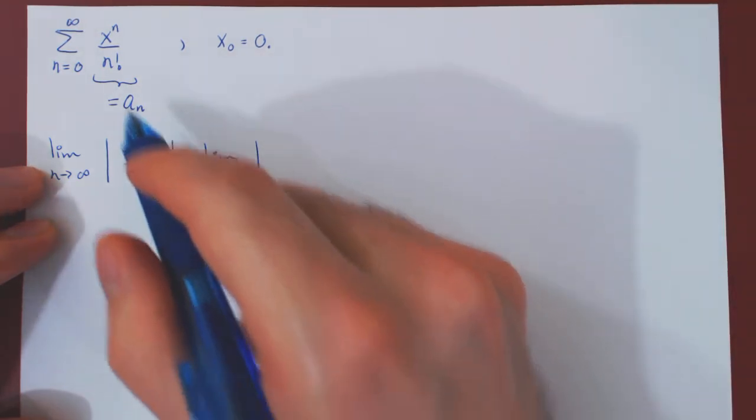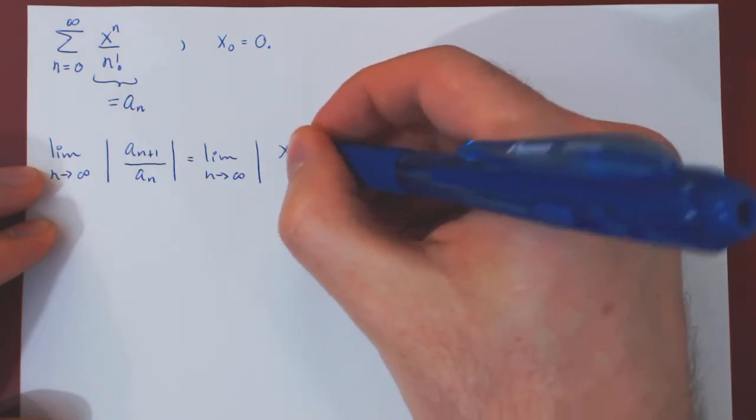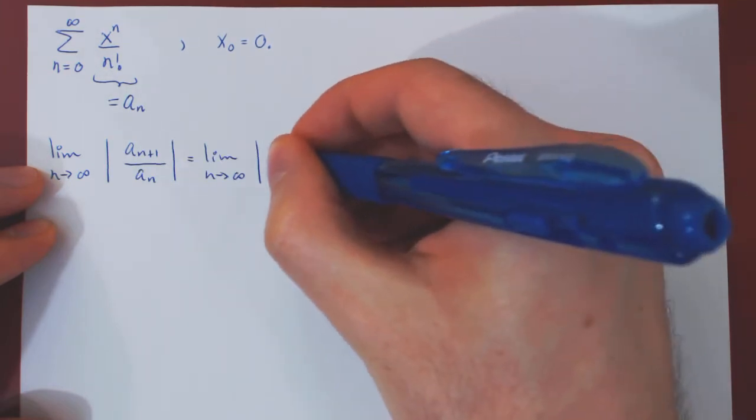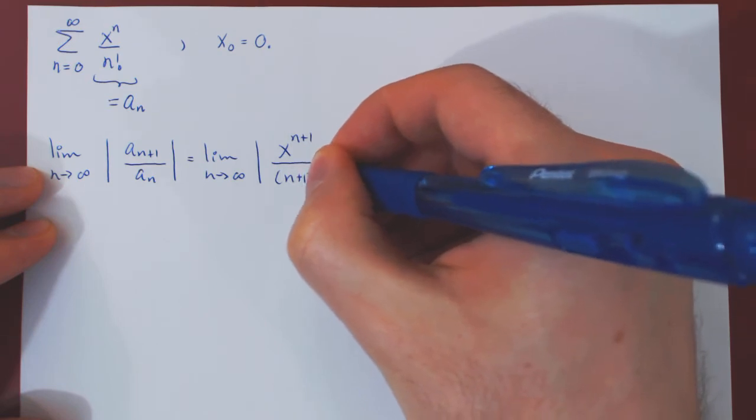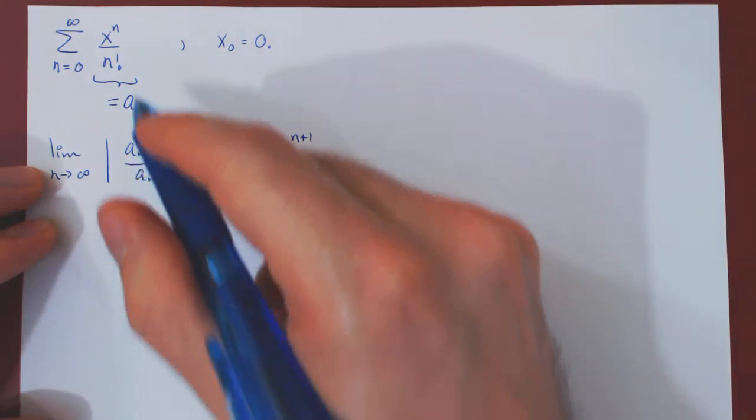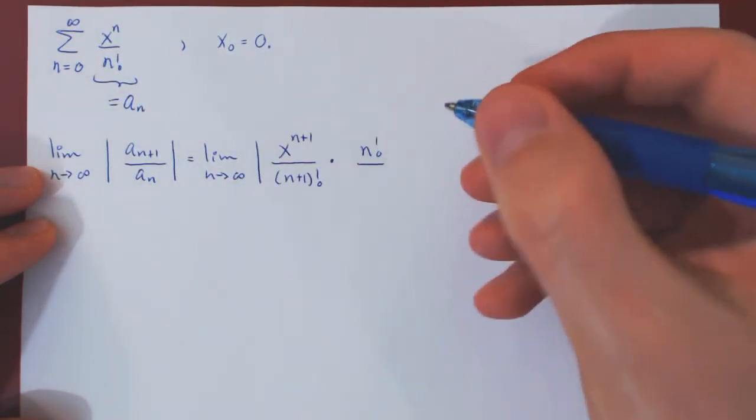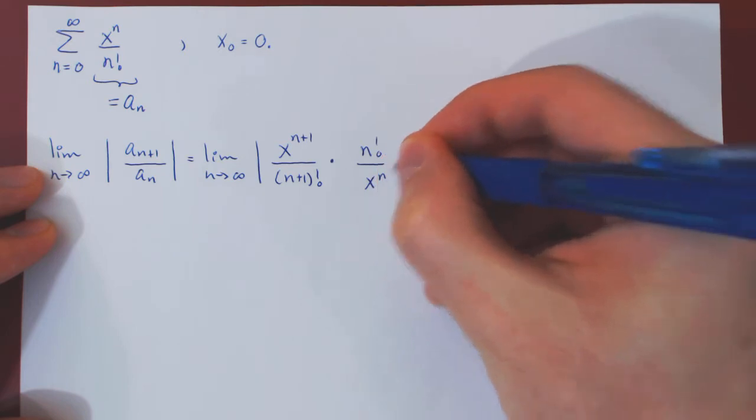To obtain a_(n+1), replacing the subscript n by n+1 gives us the term x^(n+1) over (n+1) factorial. We divide by a_n, therefore we multiply by the reciprocal, n factorial over x^n.